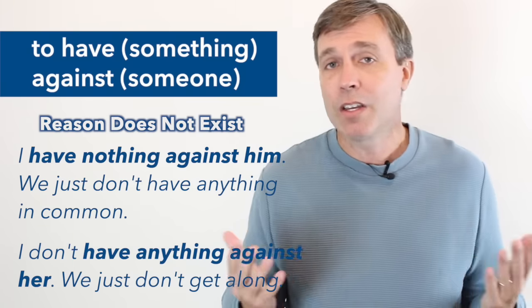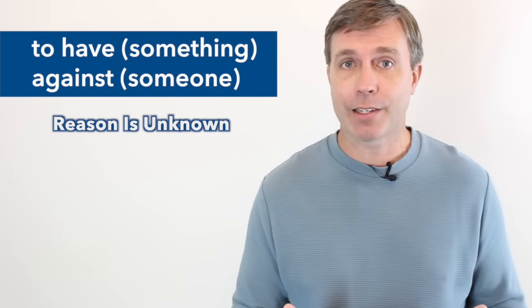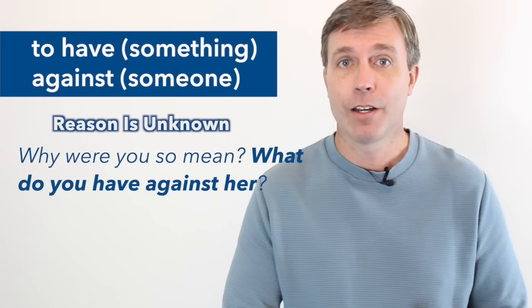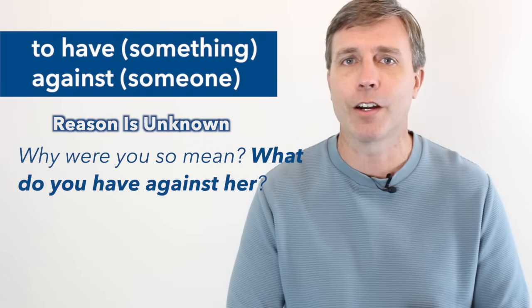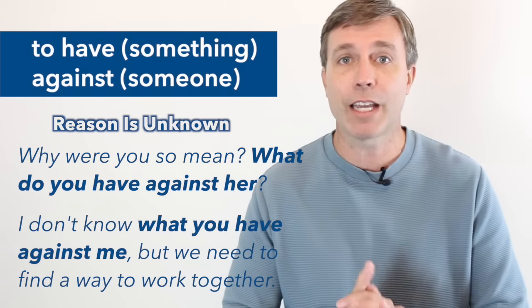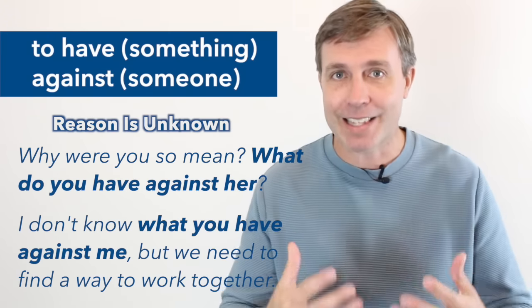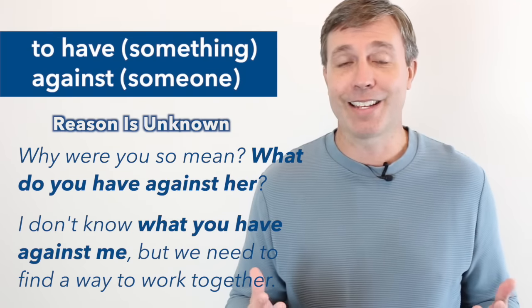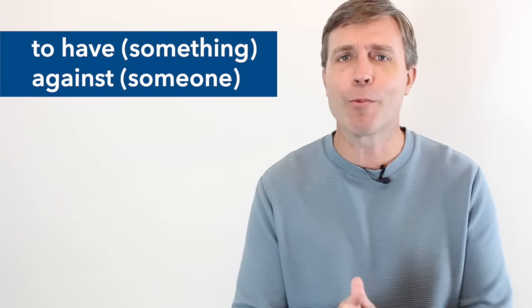If we're talking about a reason that is unknown, well, then people may ask a question and use this phrase like, why were you so mean? What do you have against her? So again, it's unknown the reason. So that's why I'm asking the question. What do you have against her? Or you could just use this in a statement. If I'm asking you like, well, look, I don't know what you have against me, but we really need to find a way to work together. So again, what you have against me is that noun clause, but I'm still talking about a reason that is unknown. I don't know what you have against me, but I know that's just an example. You know, we're friends, we get along. I think we work well together.